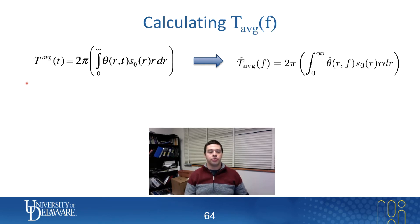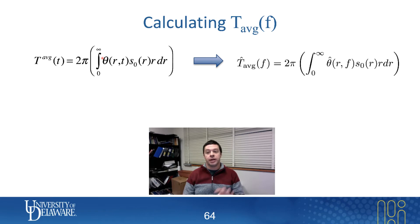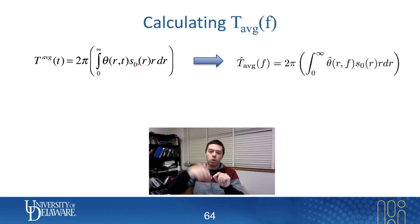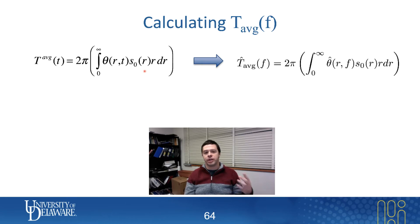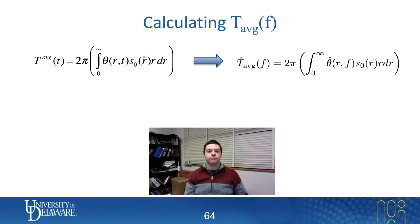In general, the average sampled surface temperature as a function of time is a continuous thing, and that would basically just be a proper area-weighted average of the surface temperature itself — not the sensed surface temperature, but just the surface temperature itself — multiplied by the local intensity of the sensing beam as a function of position. So the average sample temperature is just a spatial average of the temperature weighted by the local intensity of the laser beam, and then I take the Fourier transform in time of that.